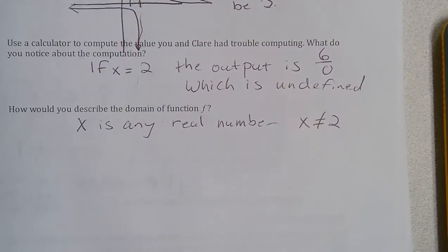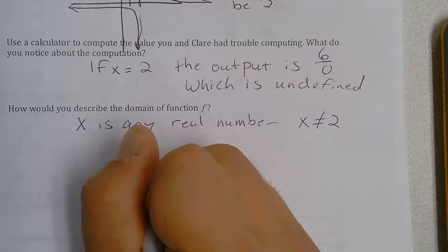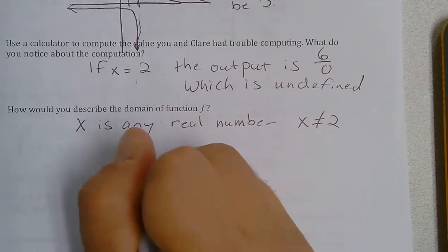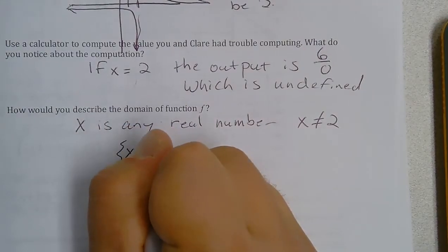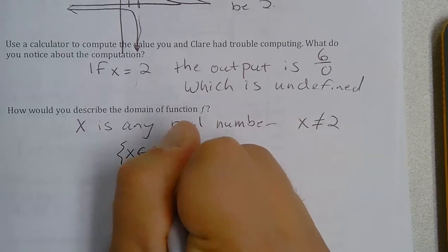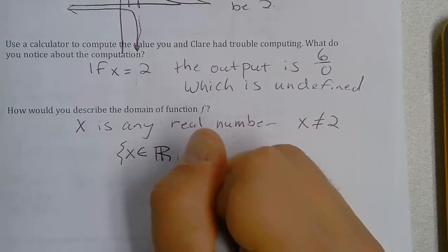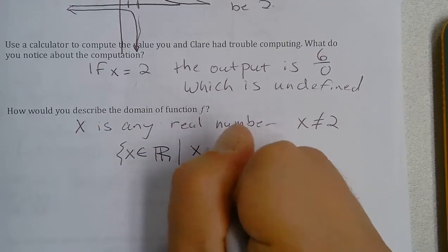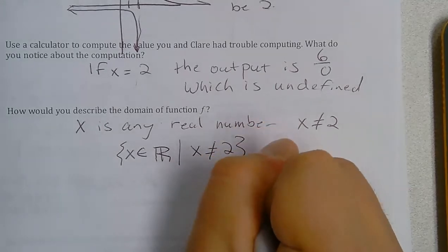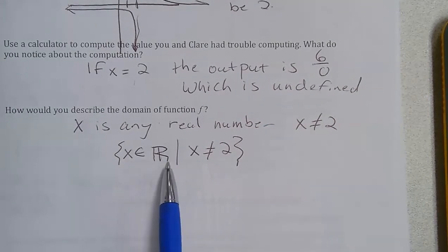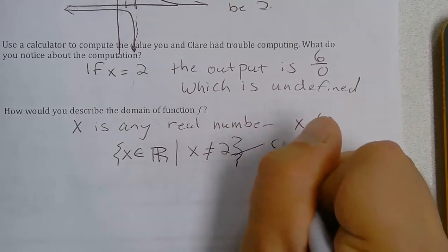So there's fancier ways to do that, too. You can say x in set notation. You'd say x is an element of... Here's a symbol for the real numbers, such that x is not equal to 2. That's another fancier symbol way to do that. That's more of a college notation.